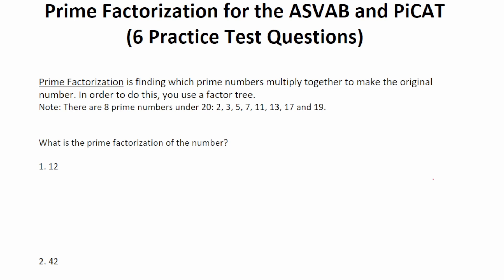More specifically, I'm going to work out six practice test questions that should closely mirror what you should expect to see on your test. In case you haven't seen this topic in a while, I want to start with the definition. Prime Factorization is finding which prime numbers multiply together to make the original number. And in order to do this, you use what's called a factor tree.